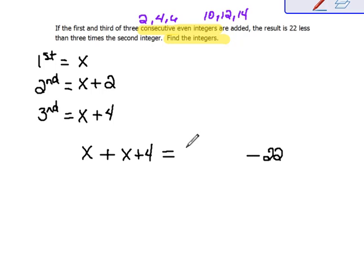22 less than, so we're going to be taking 22 away from something, three times, so we're going to be multiplying three times something, three times the second integer. Our second integer here is x plus two. So now we have our equation written.